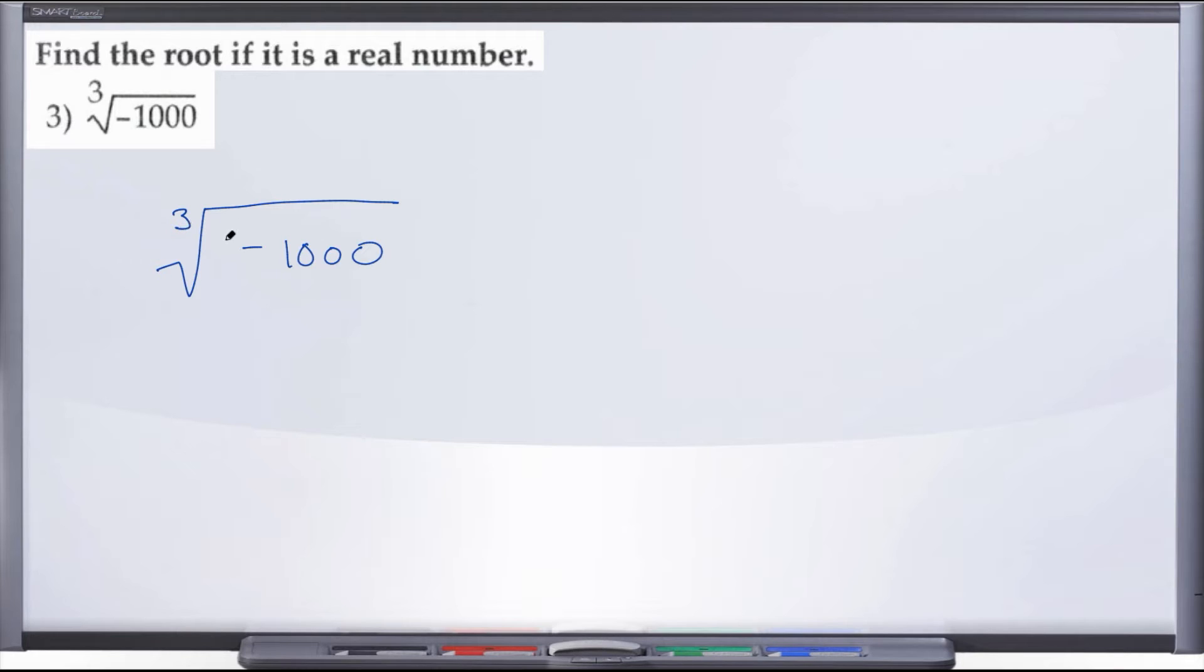Here, 3 is our index. 3 is odd, and we can have a negative under the radical with an odd index.